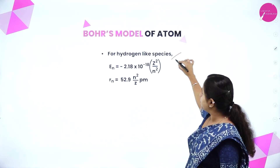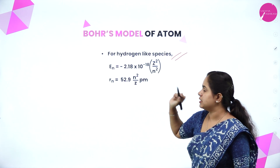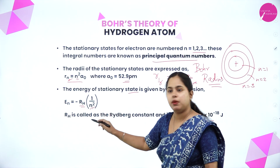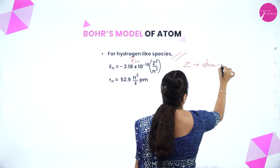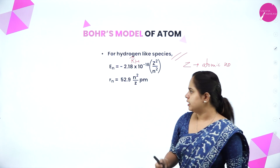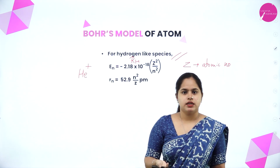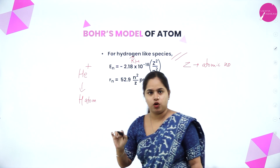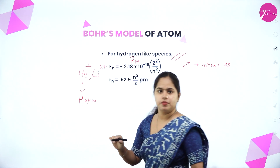For hydrogen-like species, Bohr formulated the equation En = −2.18 × 10⁻¹⁸ × Z²/N², where Z is the atomic number. Hydrogen-like species are atoms or ions with only one electron, for example helium+ ion (which loses one electron from helium's two) or lithium 2+. For helium+, you substitute Z = 2, giving En = −2.18 × 10⁻¹⁸ × 2²/N².